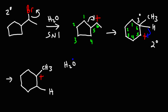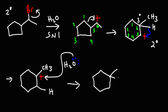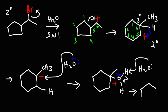In the next step, water — the solvent — is going to react as the nucleophile, making this a solvolysis reaction. Then we use another water molecule in an acid-base step to remove the proton, giving us an alcohol. The major product is 1-methylcyclohexanol.